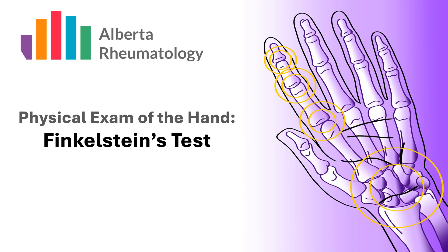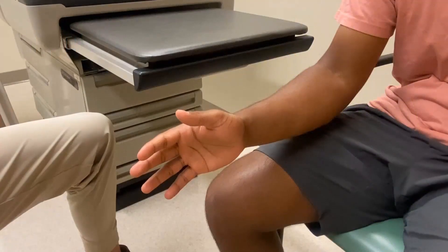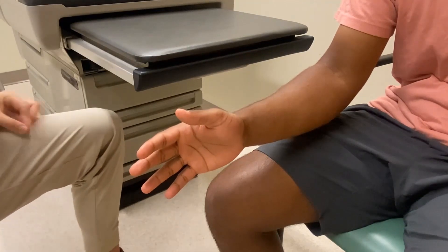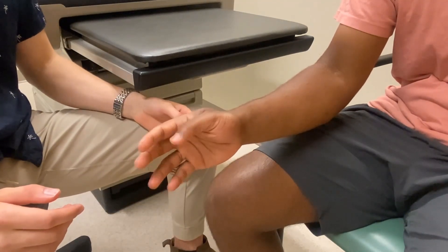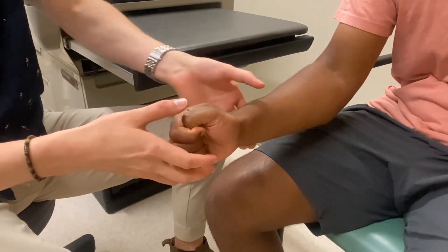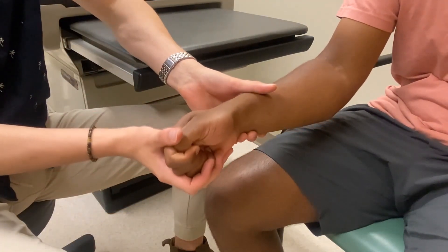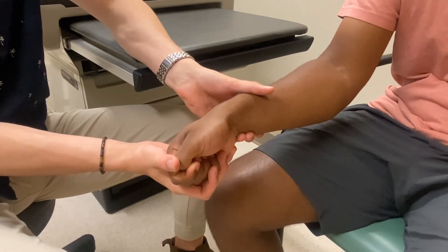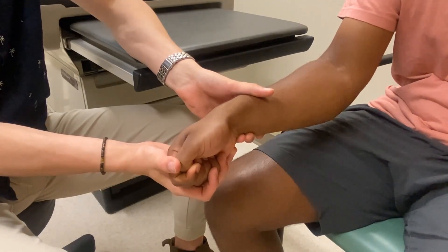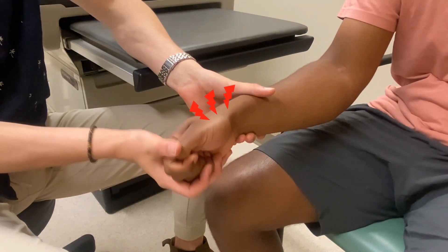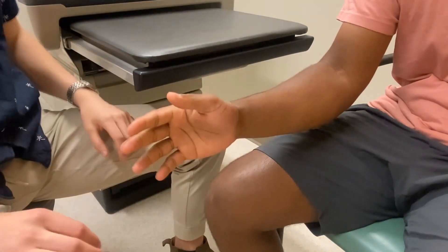Finkelstein's test is used to determine if a patient's wrist and hand pain is due to swelling of the tendons of the thumb near the wrist joint, known as de Quervain's tenosynovitis. Begin with the patient seated comfortably with their hand in neutral. Have the patient make a fist with their thumb tucked in underneath the fingers. Then, with one hand supporting their wrist and the other supporting their hand and fingers, passively deviate the patient's wrist downward so their pinky approaches their forearm. This position may be uncomfortable for most people; however, a positive test yields significant and familiar pain along the radial side of the forearm or thumb, suggesting de Quervain's tenosynovitis.